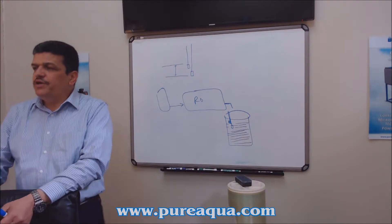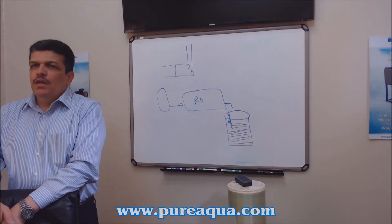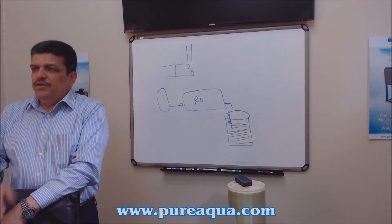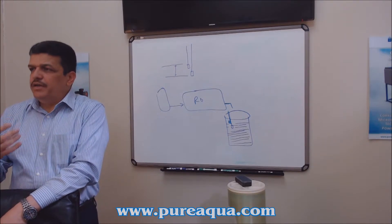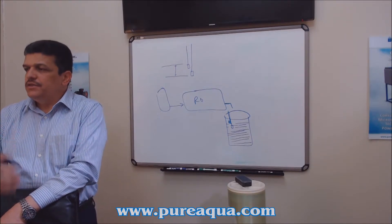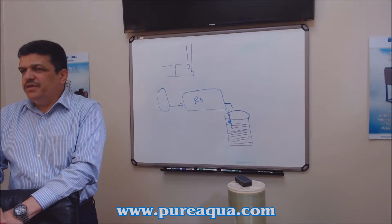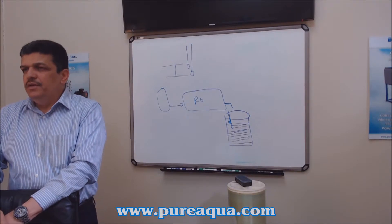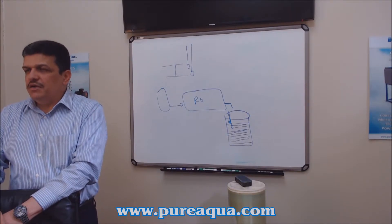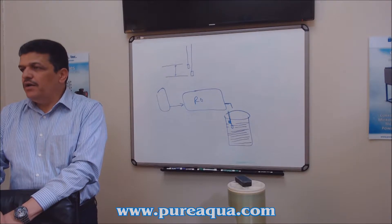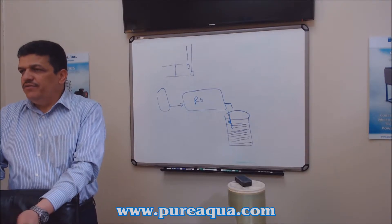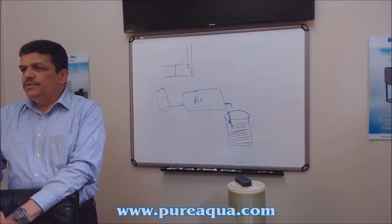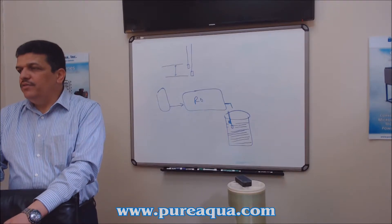In the water softener case, the ion exchange takes calcium and magnesium and releases sodium. Some people say, okay, it releases sodium, so maybe it's not a good thing to drink water out of the softener because when you have blood pressure you don't want to drink water with sodium.